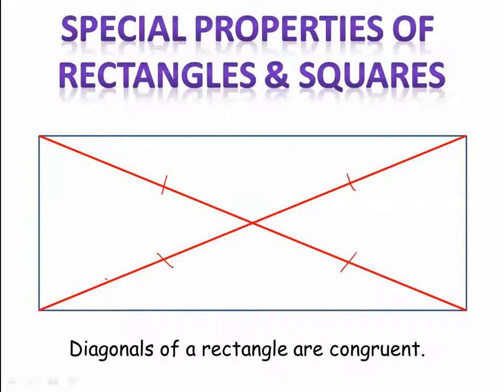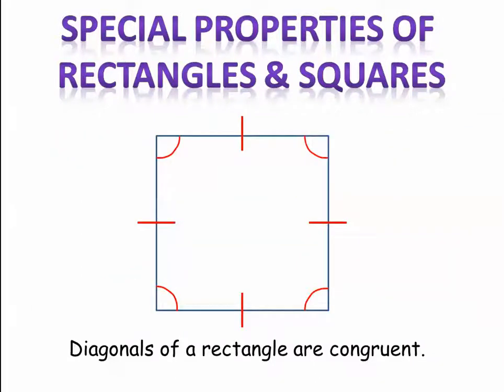Now let's look at a square. A square is a quadrilateral with four congruent sides and four congruent angles. The first condition makes a square a rhombus, because a rhombus has four congruent sides. Having four congruent angles makes a square a rectangle. So as a result, a square has all the properties of a parallelogram, rhombus, and rectangle. That means their diagonals are going to bisect each other, and they will be perpendicular, and they're going to be congruent.